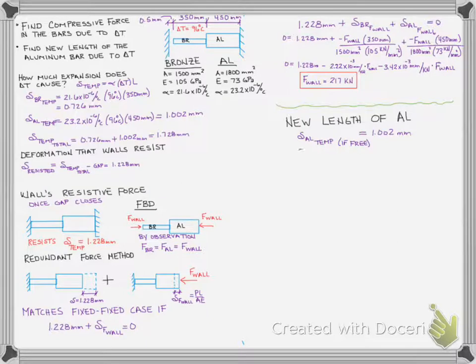Now, if we can determine how much the aluminum actually contracts or compresses due to the force in the wall, due to 217 kilonewtons, which we can easily do by plugging into our PL over AE equation, what we can find is that the aluminum wants to contract or compress by 0.743 millimeters, and of course that's negative because we're compressing.